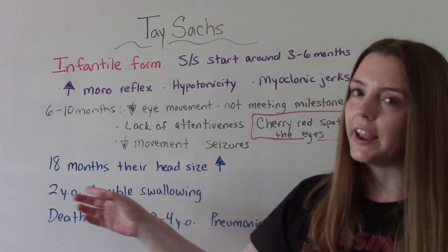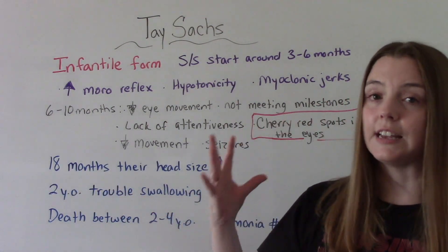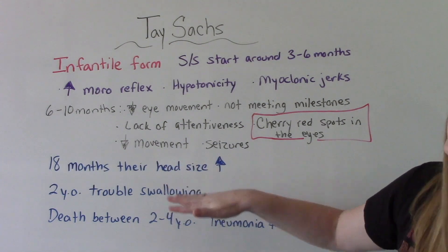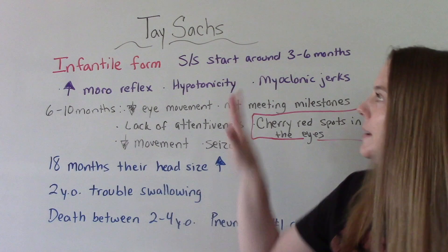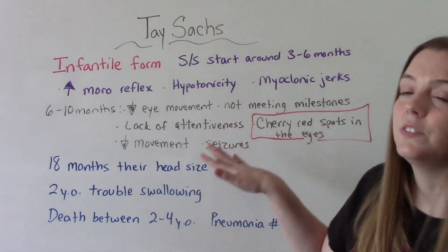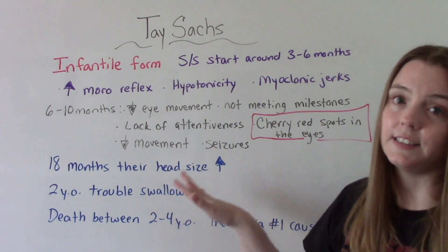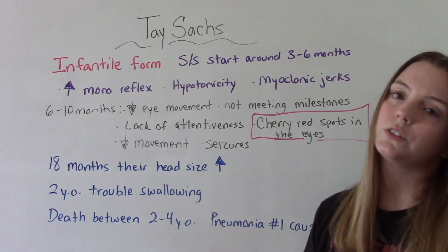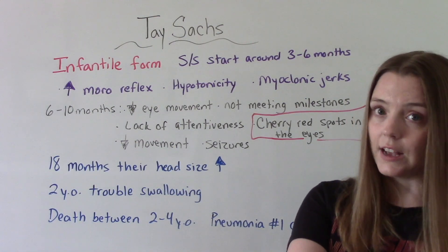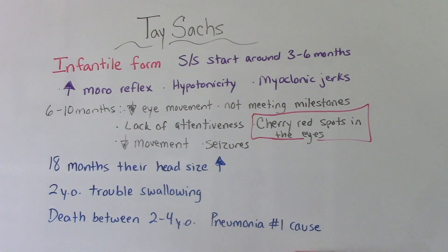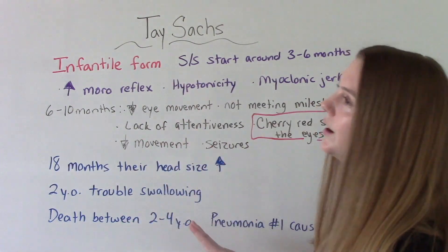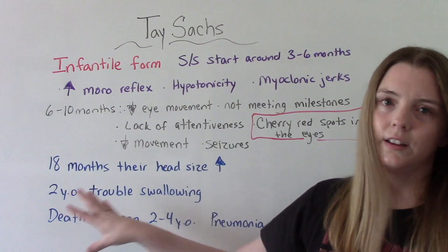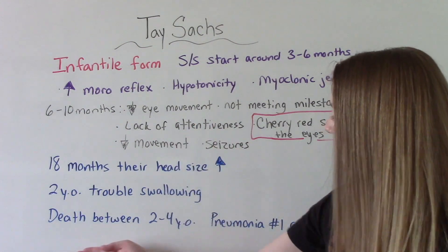As they get older, around 18 months, their head size is going to start to increase. At two years they're going to start having trouble swallowing, indicating the brain is no longer functioning properly — we've been progressively getting worse the entire time. We'll see loss of brain function, and they may become unresponsive or enter a coma. Eventually, between the ages of two and four years old, they usually pass away. The number one cause of death is pneumonia, which is related to all the other symptoms they're experiencing.